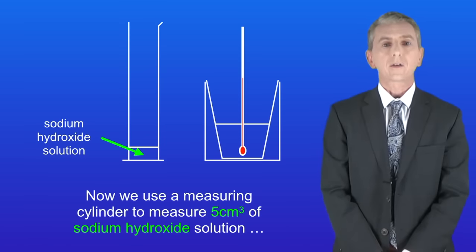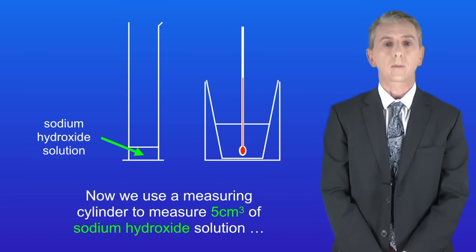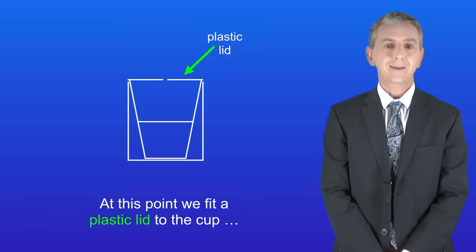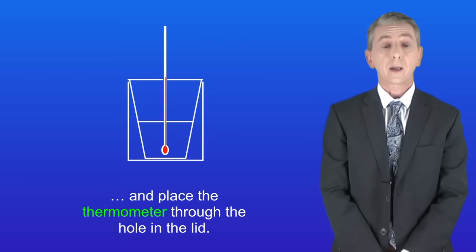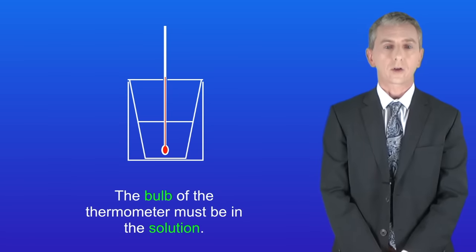Now we use a measuring cylinder to measure five centimeters cubed of sodium hydroxide solution and we transfer this to the polystyrene cup. At this point we fit a plastic lid to the cup and place the thermometer through the hole in the lid and the bulb of the thermometer must be in the solution.